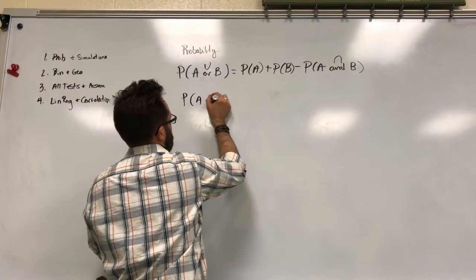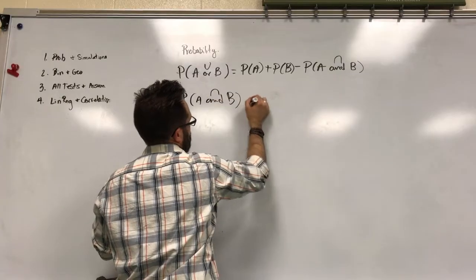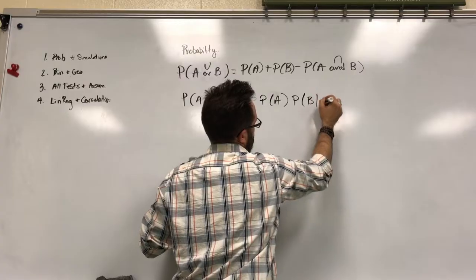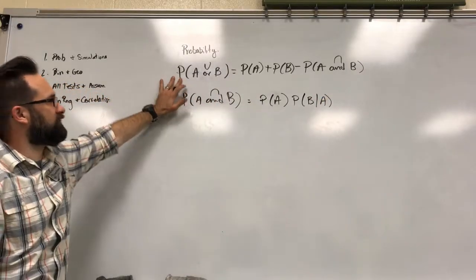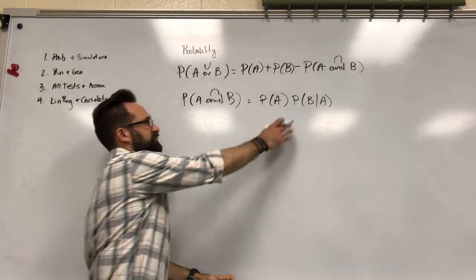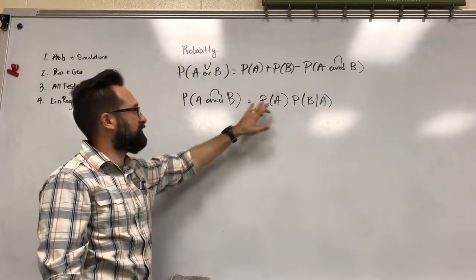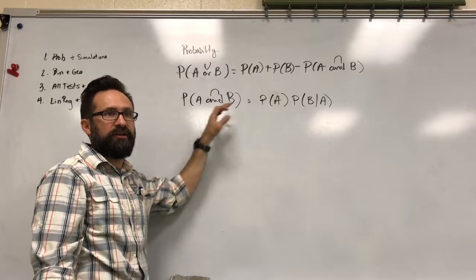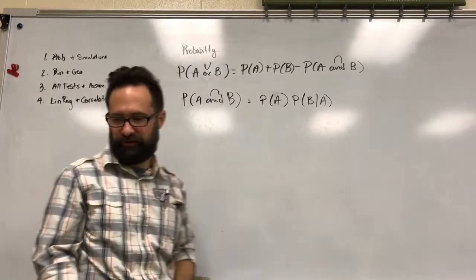Let's do it this way. So you have the general addition rule and the general multiplication rule. This one has conditional probability built into it. So I can rearrange this formula by dividing by A on both sides, and I get conditional probability. So I'm not going to do that right now, but these are the two formulas that are really important.